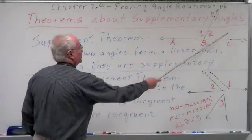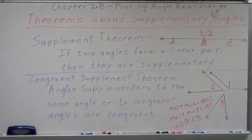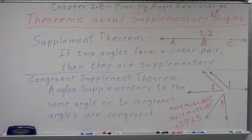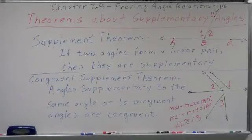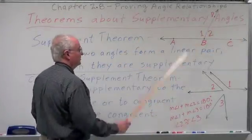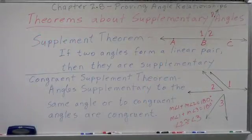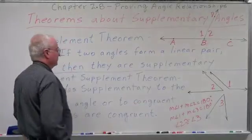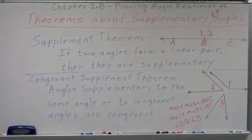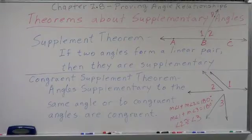Here are our two angles — angle one and angle two — they form a linear pair. Ray VA and ray VC are opposite rays, which is the definition of a linear pair: if the non-common sides of two adjacent angles form a straight line, then they are a linear pair. They form a straight line and a straight angle. A straight angle measures 180 degrees. Therefore, the measure of angle one plus the measure of angle two equals 180, which is the definition of supplementary. Therefore, angle one and angle two are supplementary. We'll go through that proof.